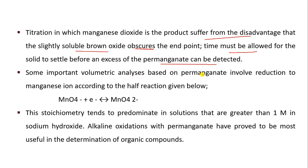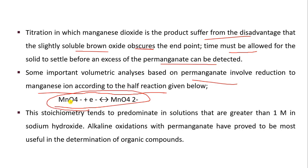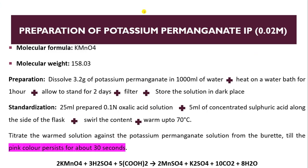Some important volumetric analyses based on permanganate involve the reduction to manganese ion according to a half reaction. Here we can see the half reaction: MnO4⁻ accepts electrons, giving a stoichiometry that is prominent in solutions greater than 1 molar in sodium hydroxide. Now we will see the preparation and standardization of potassium permanganate IP of 0.02 molar.